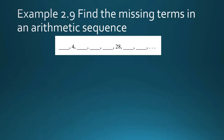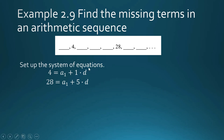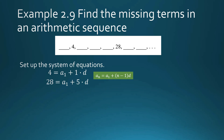We set up a system of equations using the known terms: the second term is 4 and the sixth term is 28. Using the nth term formula: 4 = a sub 1 + (2 − 1)d, so 4 = a sub 1 + d. And 28 = a sub 1 + (6 − 1)d, so 28 = a sub 1 + 5d.